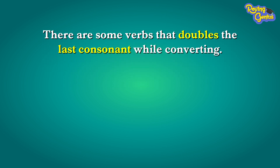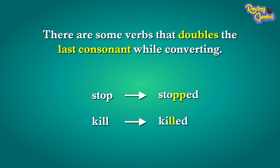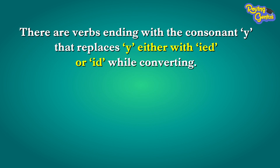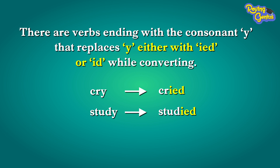There are some verbs that double the last consonant while converting. For example, stop becomes stopped, kill becomes killed. There are also verbs ending with the consonant Y that replace Y with -ied or -id while converting. For example, cry becomes cried, study becomes studied, pay becomes paid, lay becomes laid.